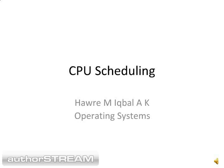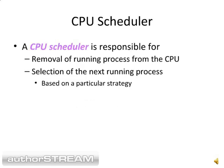Today we will start Chapter 4: CPU Scheduling, which is a part of operating systems. The CPU scheduler is responsible for two things: number one, removal of the running process from the CPU, and number two, selection of the next running process.